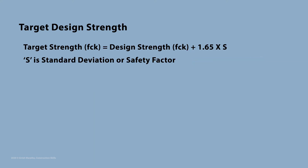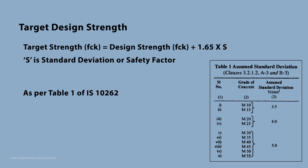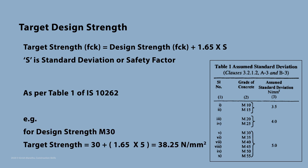First we have to set the target design strength for our concrete. Target design strength is design strength FCK plus 1.65 times S, where S is the standard deviation. Standard deviation is as per Table 1 in IS code, and is used as a safety factor. Hence if our design strength is M30, target strength shall be 30 plus 1.65 times S, which equals 38.25 N per mm².